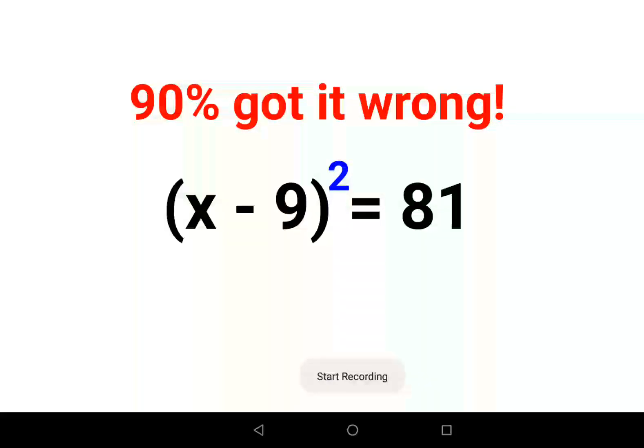Welcome everyone, so today we are going to understand how to solve these kinds of indices problems and why 90% of people got it wrong. Here we have (x - 9)² = 81.